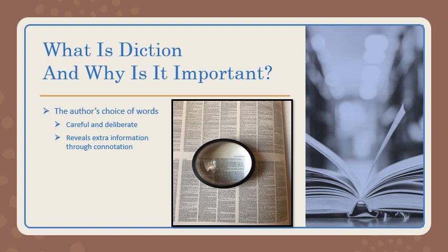When we have careful and deliberate diction, it's purposeful diction, and it's going to reveal extra information through connotation. Connotation means there's an underlying meaning — it's not just the dictionary definition, but we understand that there are certain meanings that come along with words, even if that meaning isn't in the dictionary. So when we really carefully and deliberately pick our diction, we're not just giving a word that portrays scientific information, but it also portrays feeling, emotion, and other ideas beyond that.